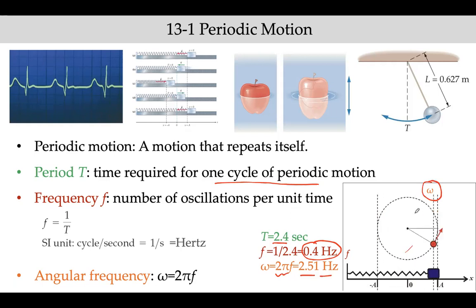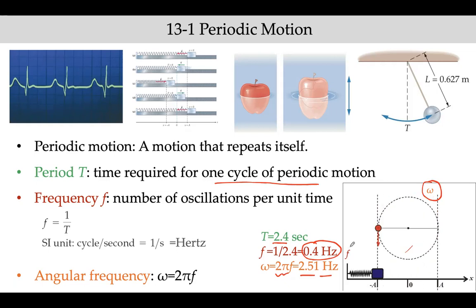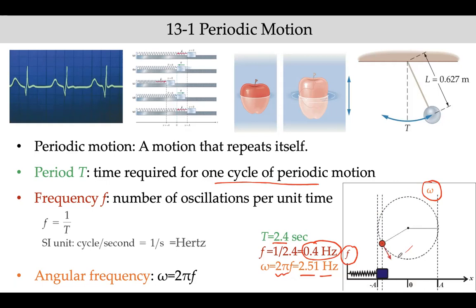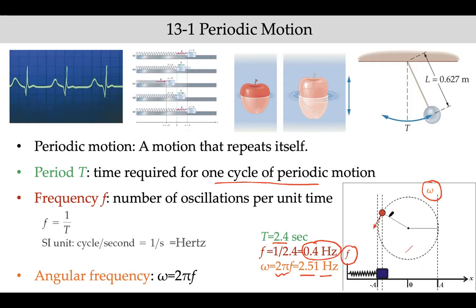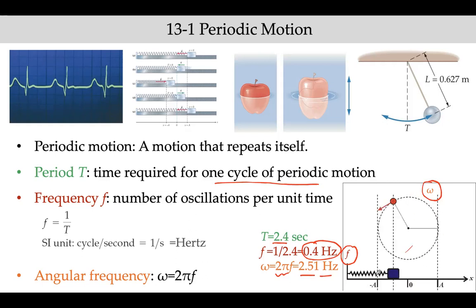The animation also shows that rotational motion is related to linear harmonic motion. If you think of this box as the projection or shadow of the rotating red object on a plane, you can see it goes back and forth with exactly the same period.